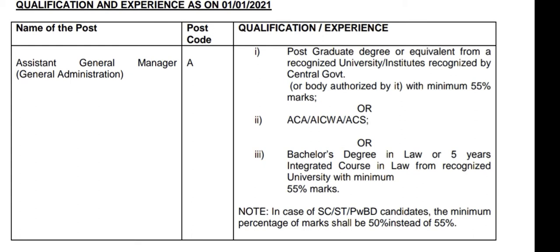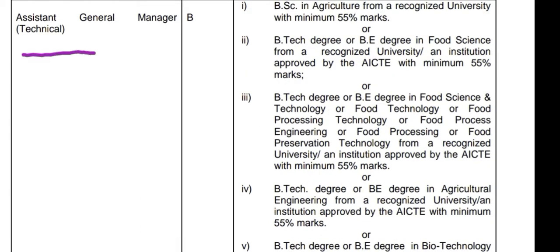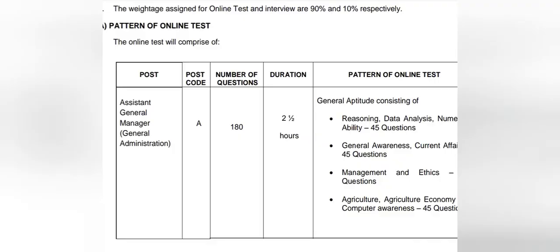For AGM General Administration, the qualification required is a postgraduate or bachelor's degree in law. For AGM Technical, the qualifications include a B.Sc. in Agriculture, a B.Tech or B.E. degree in Food Science or Food Science and Technology, Agricultural Engineering, or a B.Tech or B.E. degree in Biotechnology.